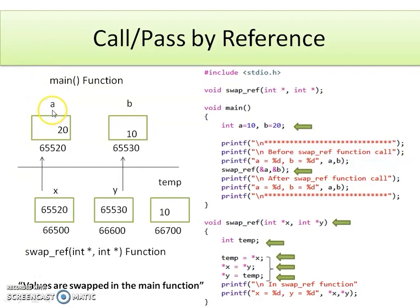At the end we can see that the values are swapped in the main function — a is now holding 20 and b is holding 10. In this way swapping of the content of the variables is done, which was not possible with call by value when only values were passed to the function.